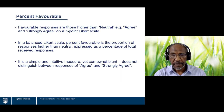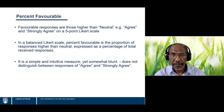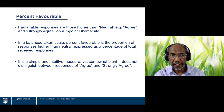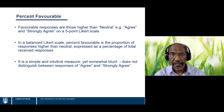Percent Favorable is a simple measure: the percentage of respondents who agreed or strongly agreed — the favorable responses — expressed as a percentage of the total number of responses. It is simple and intuitive, yet somewhat blunt, because it does not distinguish between agree and strongly agree. But it is a useful measure, and we'll see how it relates to the other two metrics shortly.